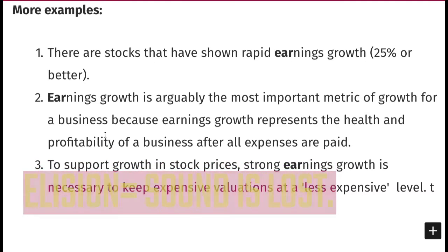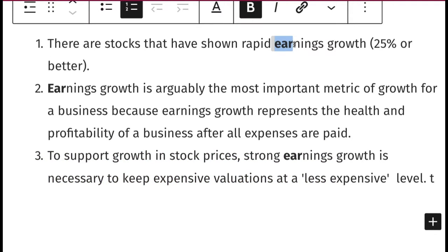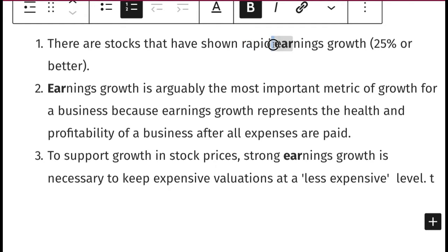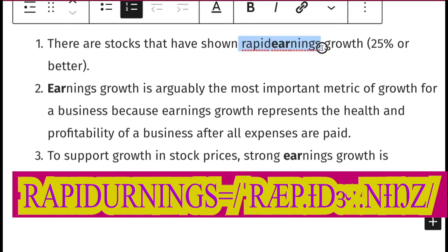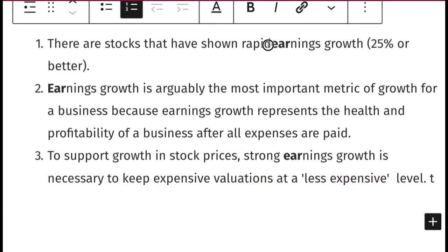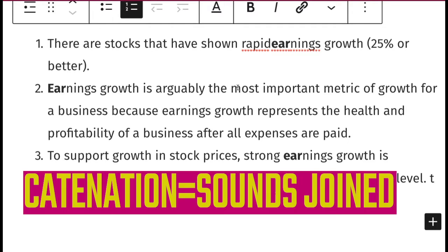Let's look at earnings growth in more examples. As you can see, I've indicated the schwa R sound in bold. There are stocks that have shown rapid earnings growth, 25% or better. Here we have the word 'rapid,' so you have to join 'rapid' with 'earnings' together — that results in the sound 'rapid earnings.' This phenomenon in linguistics where we join the end of one word with the beginning of another is called catenation.